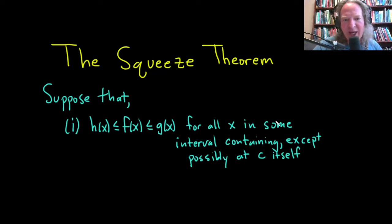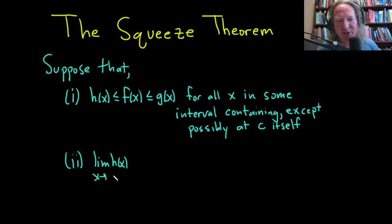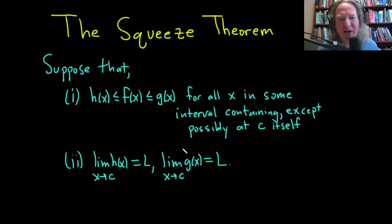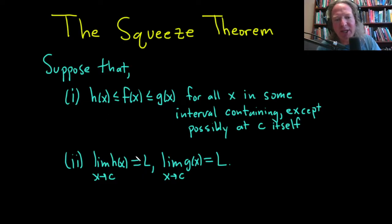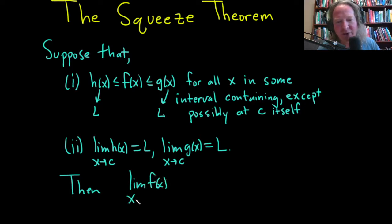So you have this inequality. The second condition is that you have some limits. If the limit of h of x as x approaches c exists — let's say it's equal to L — and the limit as x approaches c of g of x is also L, then we have the following conclusion: the limit of f of x as x approaches c is also equal to L.